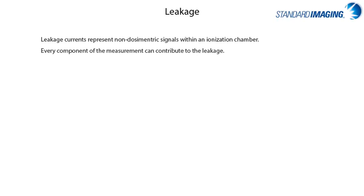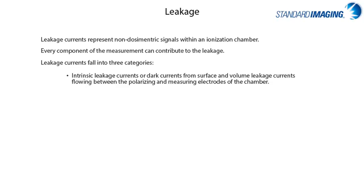Every component of the measurement can contribute to leakage — this includes the electrometer, the chamber, and the triaxial cable used to connect the two. A well-designed system will have leakage currents at least two orders of magnitude lower than the measured dosimetric signal of interest. Leakage currents fall into three categories: intrinsic leakage currents or dark currents, resulting from surface and volume leakage currents flowing between the polarizing and measuring electrodes of the chamber.